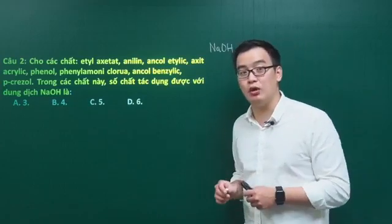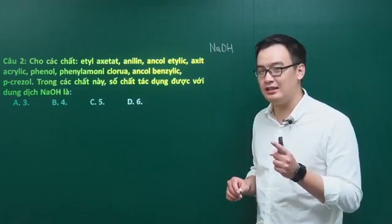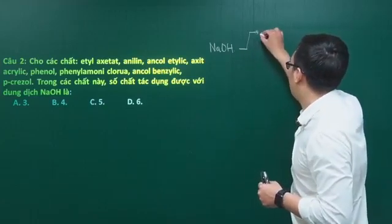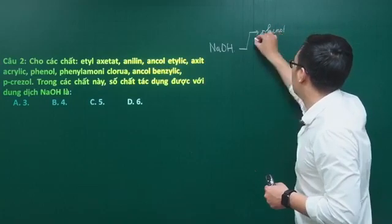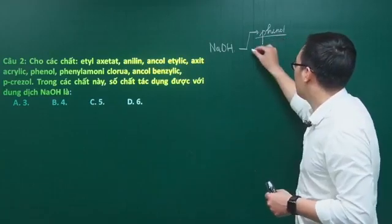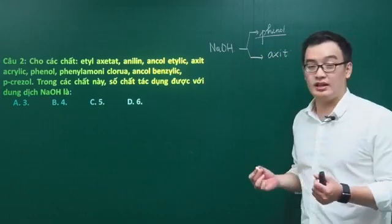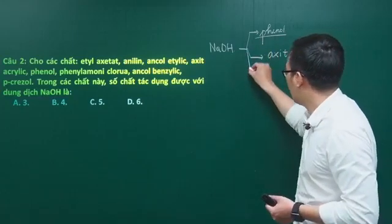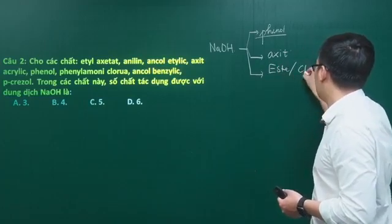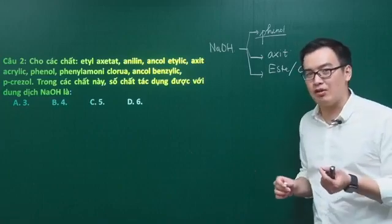Nói về phản ứng với NaOH thì có rất nhiều hợp chất hữu cơ có thể phản ứng được. Ở chương trình lớp 11 có 2 hợp chất hữu cơ có tính acid có thể tác dụng được với NaOH: thứ nhất là phenol (hợp chất hữu cơ có nhóm OH gắn trực tiếp vào vòng benzene), thứ hai là các acid carboxylic. Lên lớp 12 thì có thêm ester và chất béo, cả hai đều có thể bị thủy phân trong môi trường kiềm.